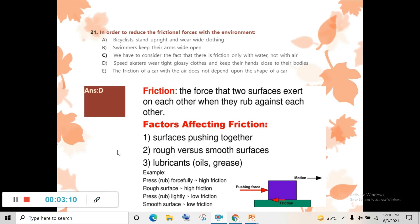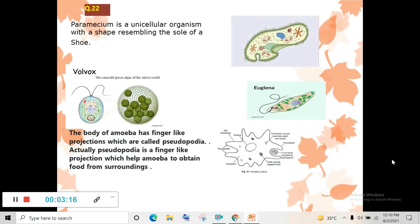Question 22: Paramecium is a unicellular organism with a shape resembling the sole of a shoe. You can see this organism is known as paramecium and you can see here hair-like structures. They are known as cilia. I am talking about unicellular organisms and some particular organs they have by which they can move.